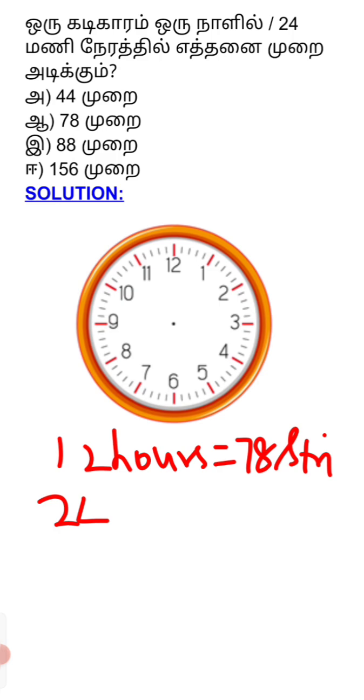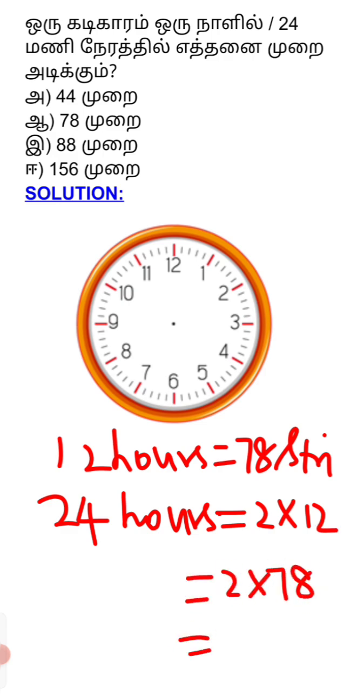If we calculate for 24 hours, we add two times 12 hours—the rotation of 12 hours twice. So 8 twos are 16, carry 1. 7 twos are 14, plus 1 is 15. So 156 times the clock strikes per day.